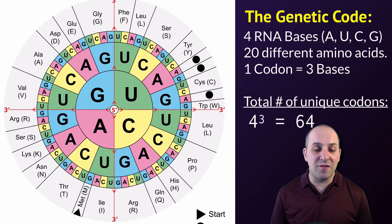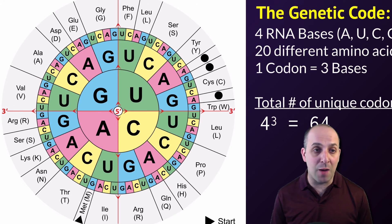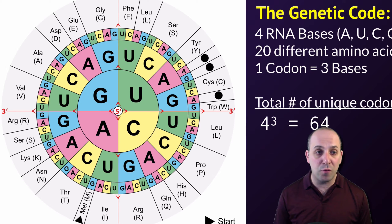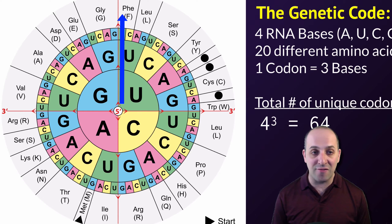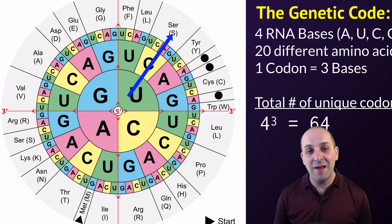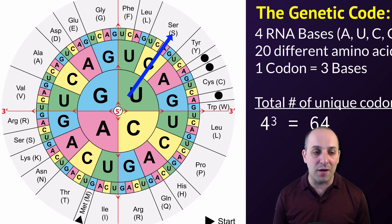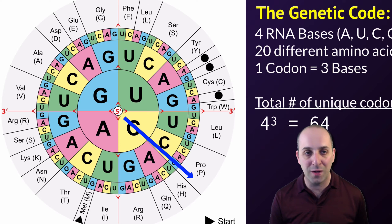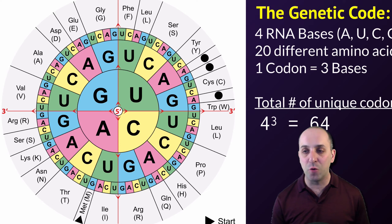The way that you read a chart like this is to start at the middle, where you see the five prime, and then move outward according to the bases that you have in the codon. So for instance, the codon UUU, if we follow it straight up, gives us phenylalanine as an amino acid, whereas the codon UCA gives us serine, or the codon CCG gives us proline. We can do this all we want through the entire wheel of possible combinations.